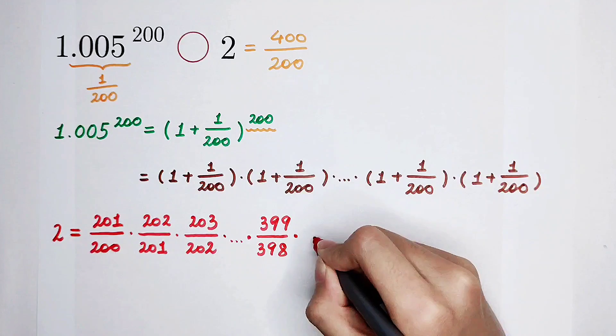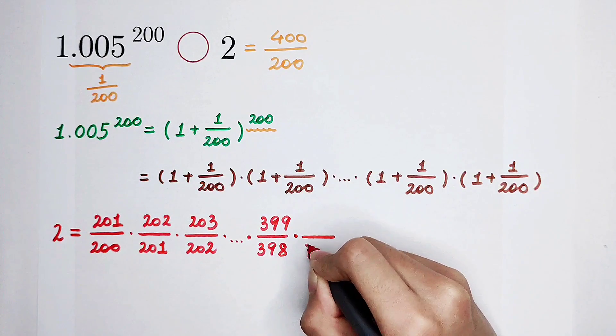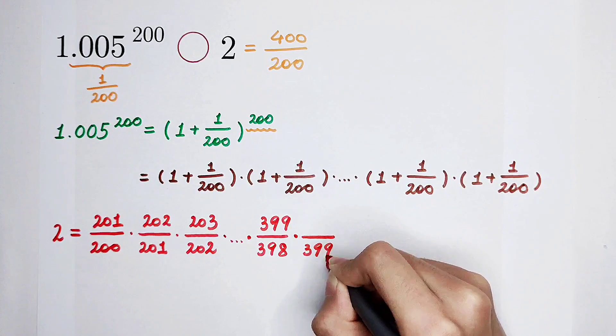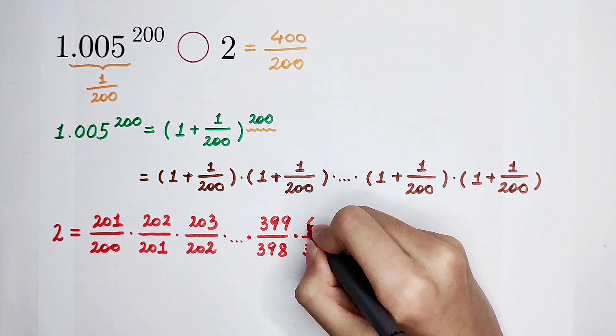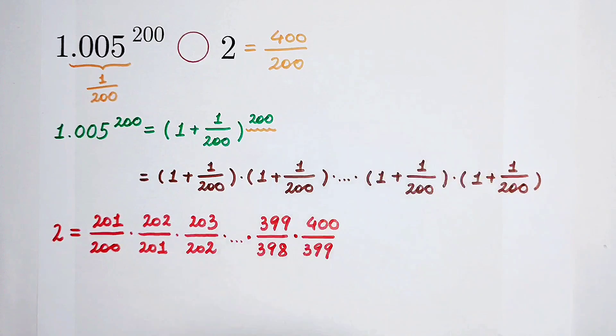And the last term is, guess what? The denominator is 399, just as this. Therefore, I can cancel it, and the numerator is 400.